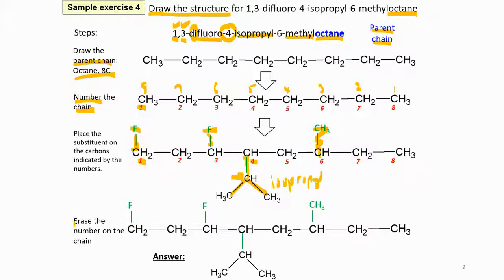Then after that you erase the number on the chain. The one, two, three, four, you can erase it. If you're already familiar, then you don't even have to label it anymore.